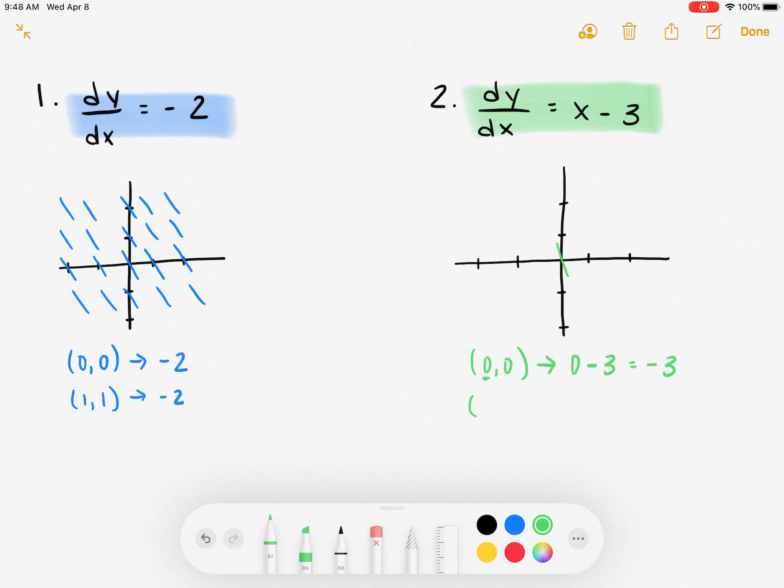Then I'm just going to move over to my next point, and I'm going to do (1,0). And I'm going to see what happens when I plug in (1,0). I'm going to get 1 minus 3, which gives me negative 2. So I'm going to have a slope that's going down, but not quite as negative as the last one.